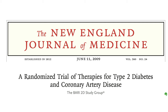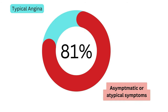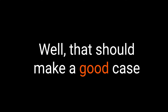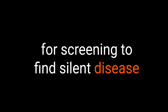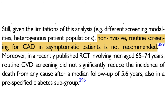The BARI-2D study, which involved more than 2,000 patients with severe coronary disease and diabetes, found that only 19 percent experienced typical angina, while the remaining 81 percent had either atypical symptoms or showed no symptoms at all. That should make a good case for screening to find silent disease in asymptomatic patients — actually, no. Screening for asymptomatic coronary disease in diabetes was a topic of debate, and most studies have not shown significant benefit of routine screening compared to standard care. Therefore, it's generally not recommended to undergo non-invasive routine screening for coronary disease if there's diabetes and no symptoms.